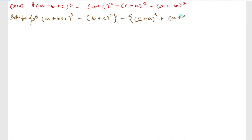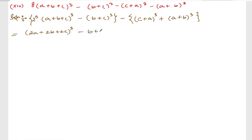Another step: 2 cube — if you multiply inside it will be (2a plus 2b plus 2c), since it is cube you can take cube as common, minus (b plus c) whole cube. Same thing here, copy as it is: (c plus a) whole cube plus (a plus b) whole cube.